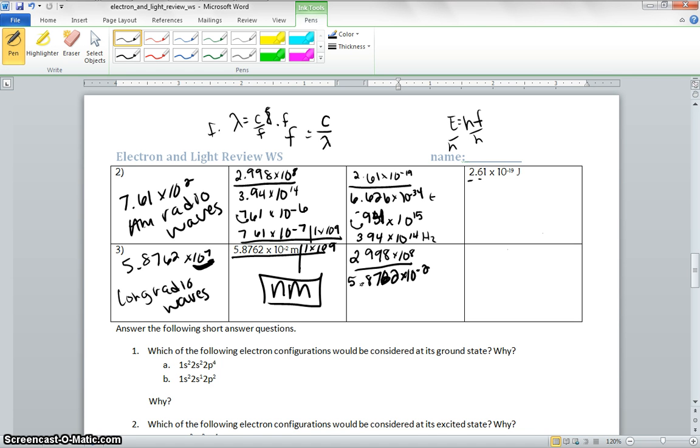2.998 divided by 5.8762 is equal to 0.510123. We have 1, 2, 3, 4, 5 significant figures. Making this number bigger, so this has to get smaller, so it should be 5.1019 times 10 to the 10th.